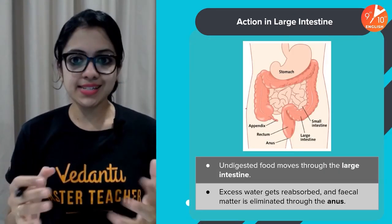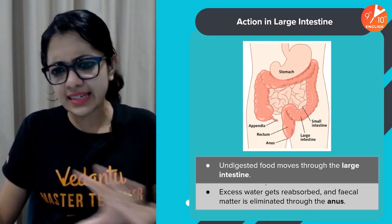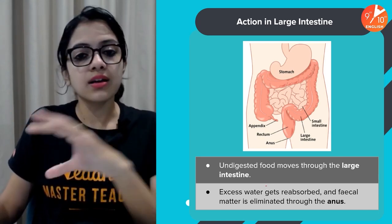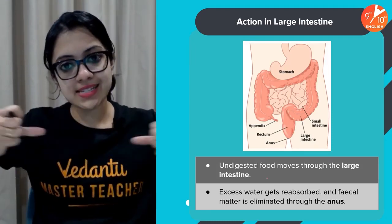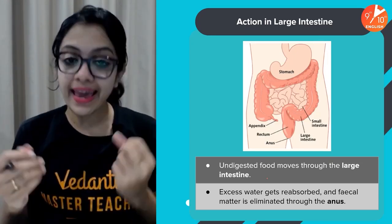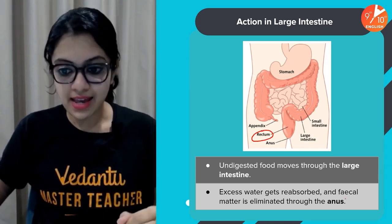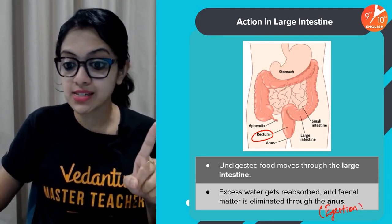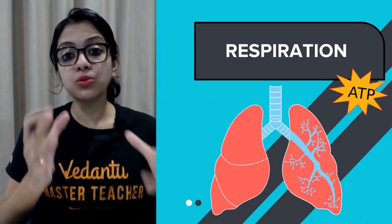Anything left undigested in the small intestine moves further down into the large intestine. The walls of the large intestine absorb excess water, and fecal matter is temporarily stored in the rectum and ultimately eliminated through the anus. We call this process egestion — remember, it is not excretion, it is egestion.